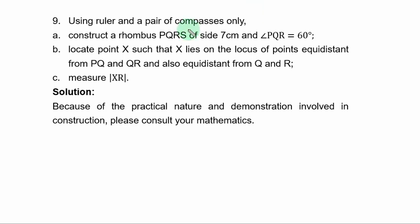Question 9. Using ruler and a pair of compasses only, construct a rhombus PQRS of side 7cm and angle PQR equal to 60 degrees.